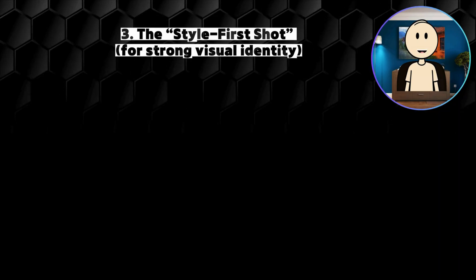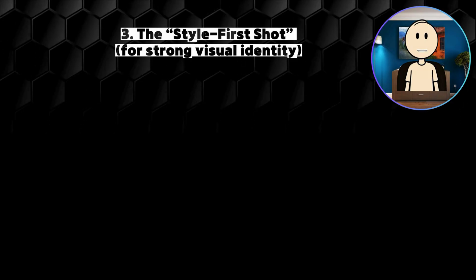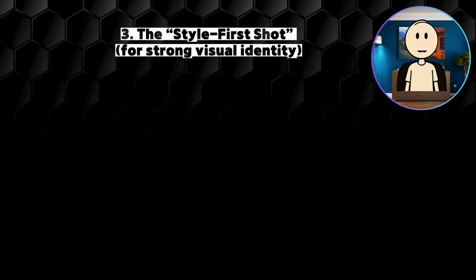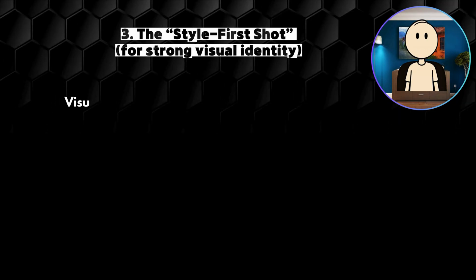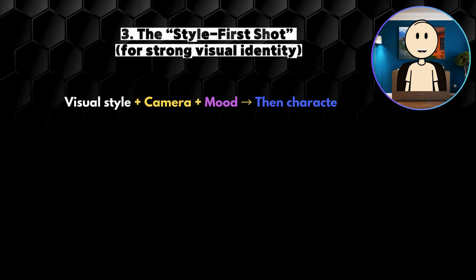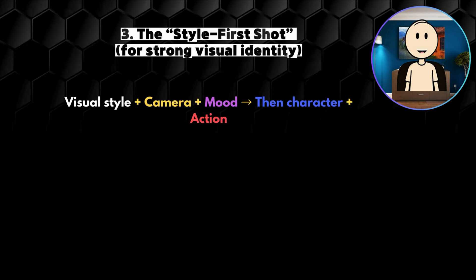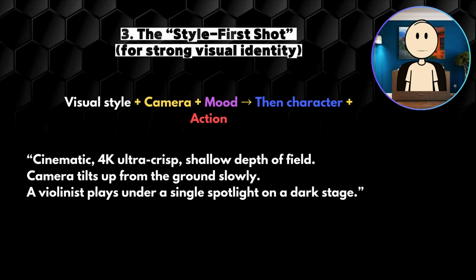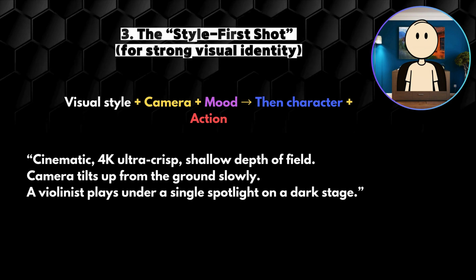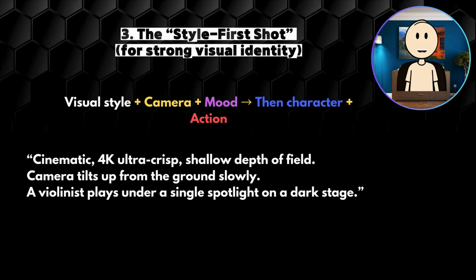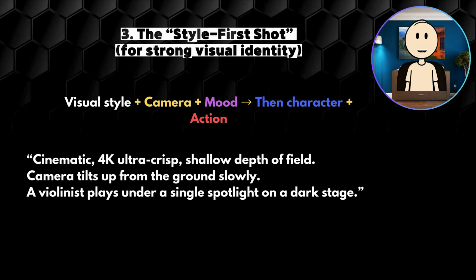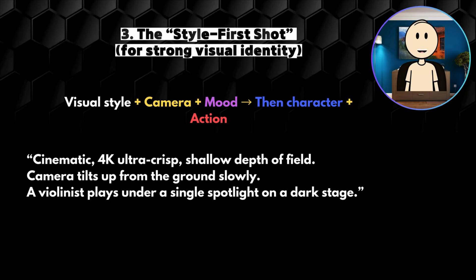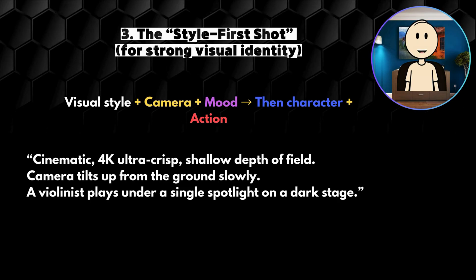The style first shot — for strong visual identity. Start with visual direction first, then add subject and action. Prompt formula: visual style plus camera plus mood, then character plus action. Example: 'Cinematic. 4K ultra crisp. Shallow depth of field. Camera tilts up from the ground slowly. A violinist plays under a single spotlight on a dark stage.' Why it works: when you're aiming for visual aesthetic, leading with style can guide the entire shot.